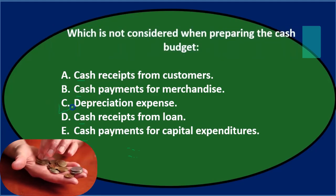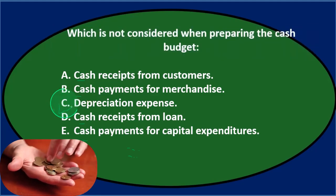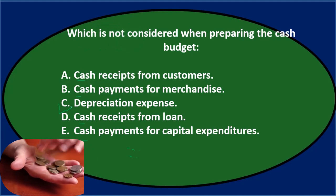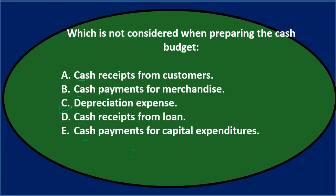The one that doesn't involve cash is Depreciation Expense. It does reduce the income statement, but it's not a cash-related item. Therefore it won't be on a cash budget — it reduces net income, not cash. Final answer: which is NOT considered when preparing the cash budget? C. Depreciation Expense.